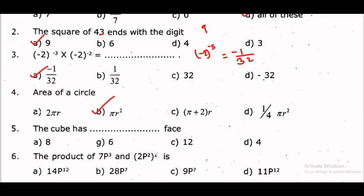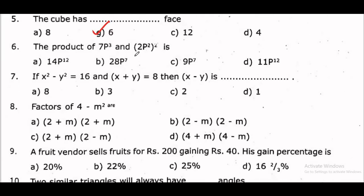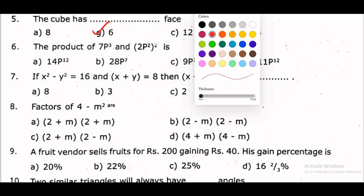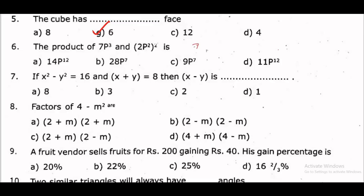7p³ into (2p²)² whole square. So (2p²)² equals 2² into p⁴ = 4p⁴. Then 7 into 4 = 28, and p³ into p⁴ = p⁷. So option B: 28p⁷.